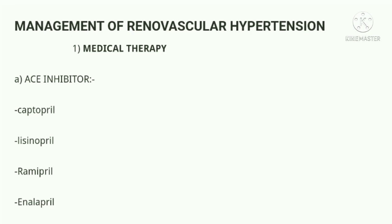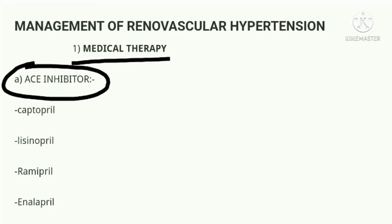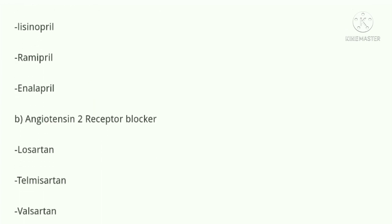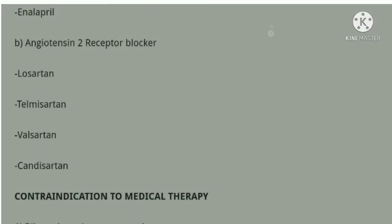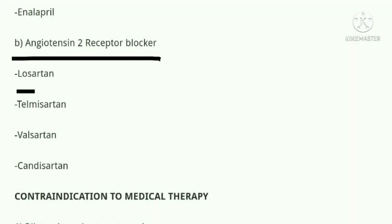Management of renal vascular hypertension involves medical therapy and surgical therapy. Medical therapy involves ACE inhibitors and ARBs (angiotensin receptor blockers). ACE inhibitors include captopril, lisinopril, ramipril, and enalapril. ARBs include losartan, telmisartan, valsartan, and candesartan.